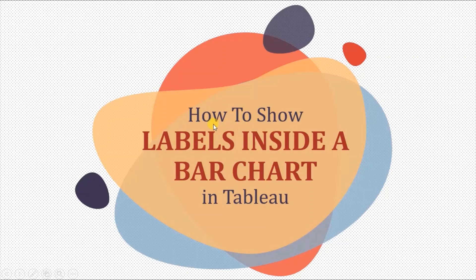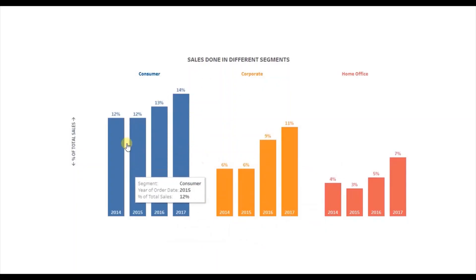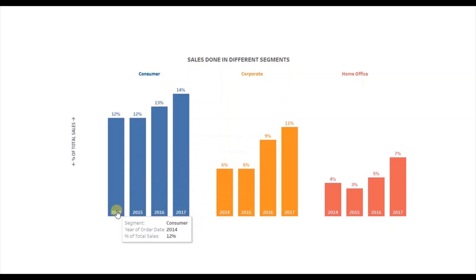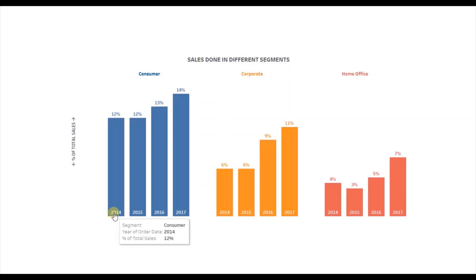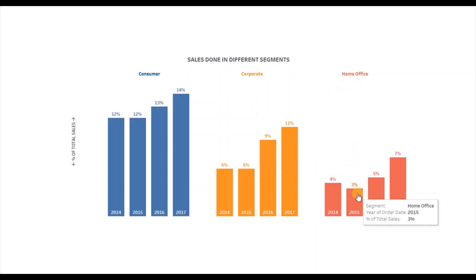In today's session we will see how to show labels inside a bar chart and also create custom header labels in Tableau. Here I have a bar chart that shows percentage of sales done in different segments — consumer, corporate and home office — starting from 2014 till 2017. The year labels are added inside the bars and these are the custom segment labels where the color of the labels match with the color of the bars: blue for consumer, orange for corporate and red for home office.